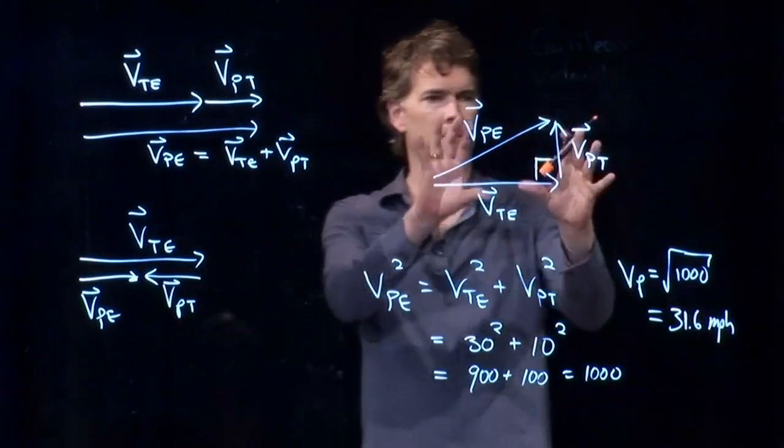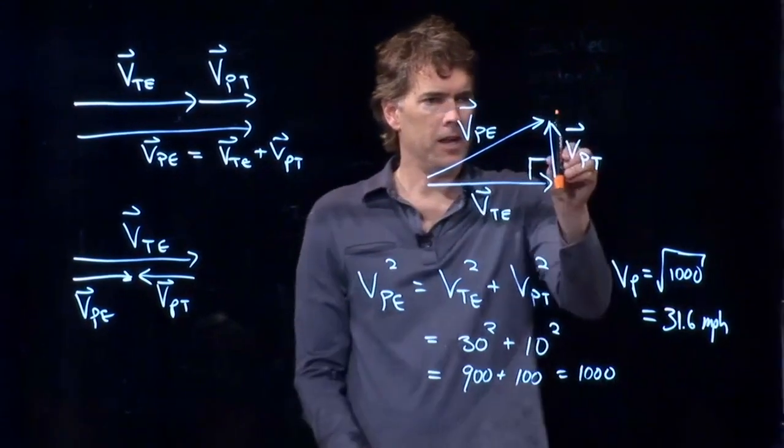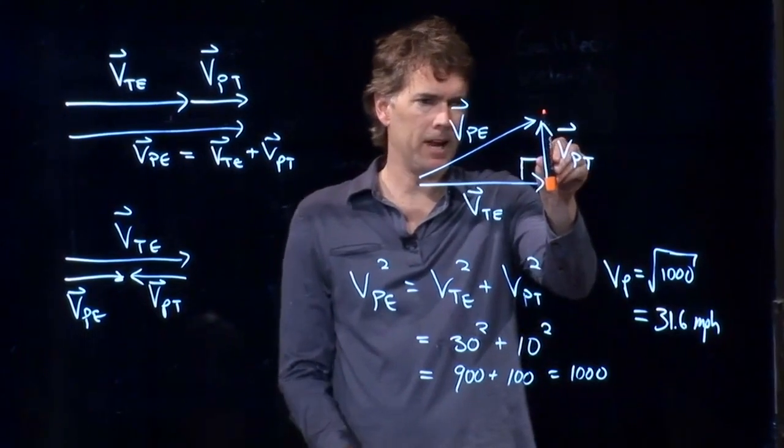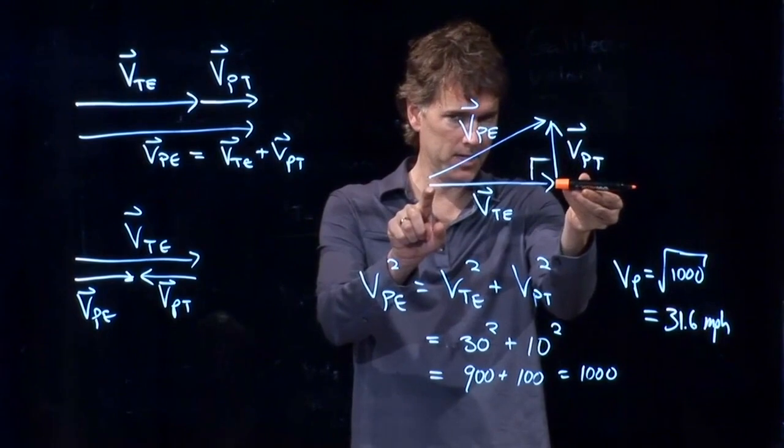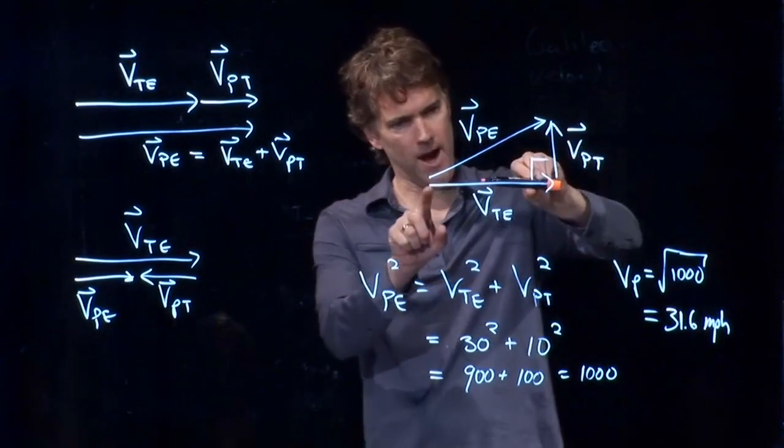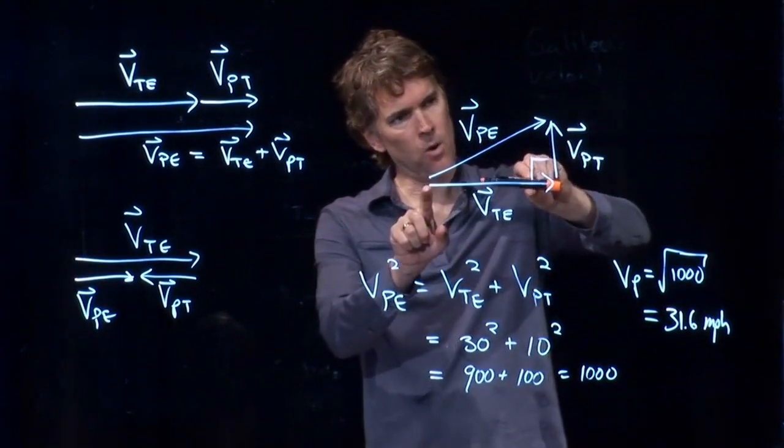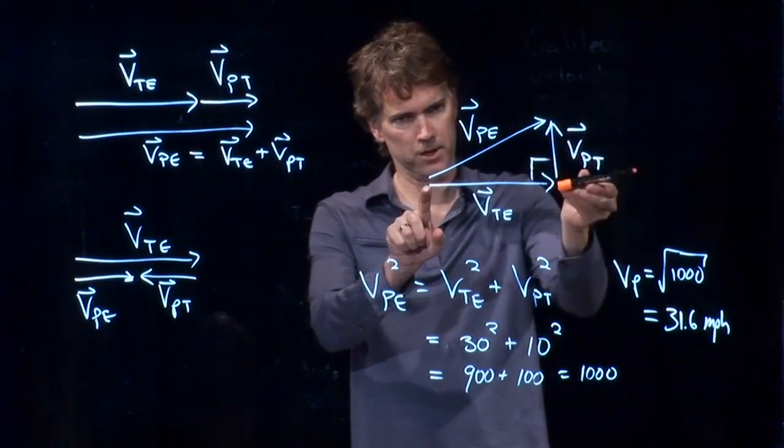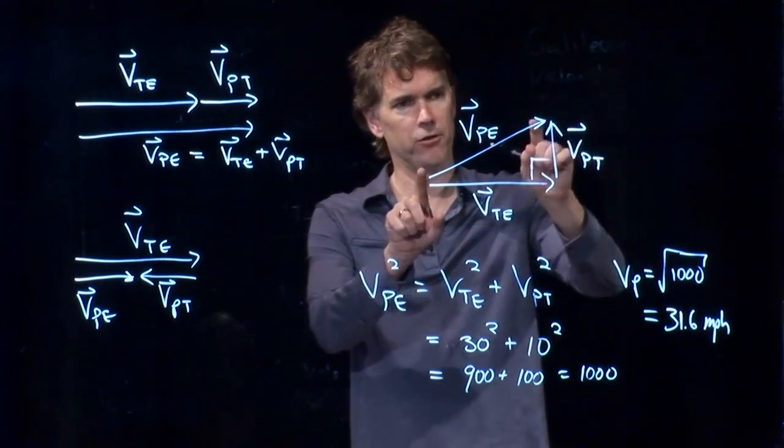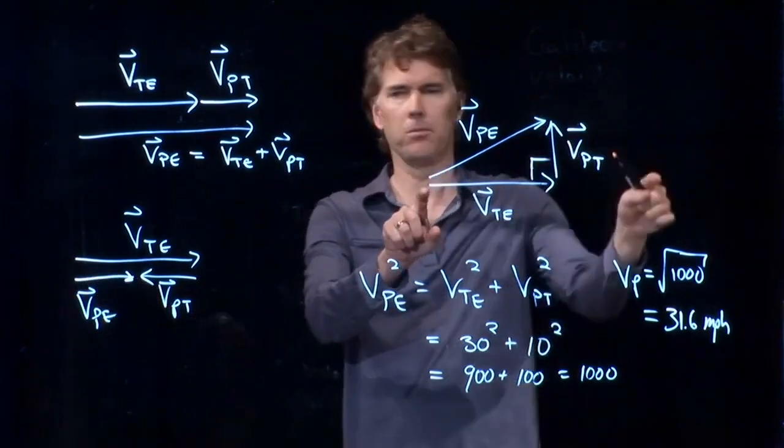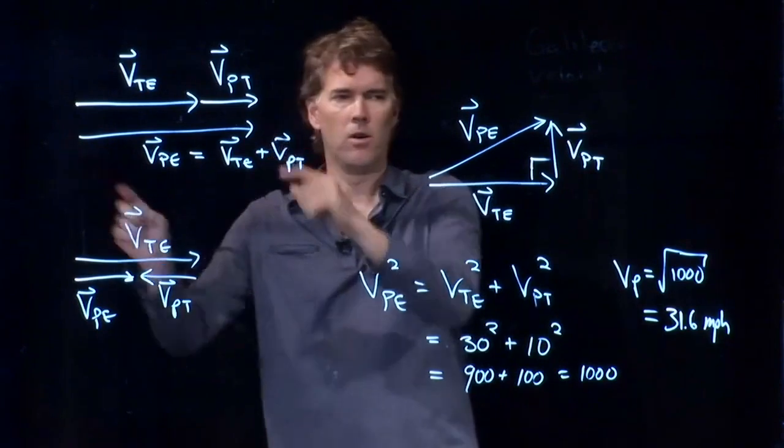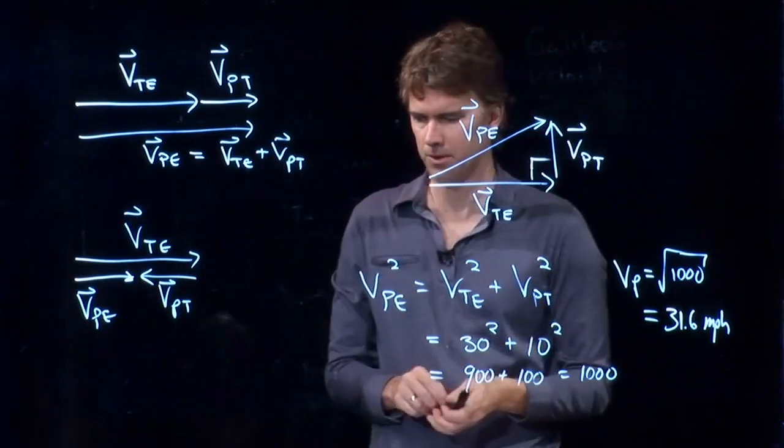So, look at this picture right here. If I take V_PT and I move it in a different direction, I can either add it to V_TE, I can subtract it from V_TE, or I can go somewhere in between. And so V_PE is going to go from this short arrow to a maximum of this long arrow, or something in between the two.